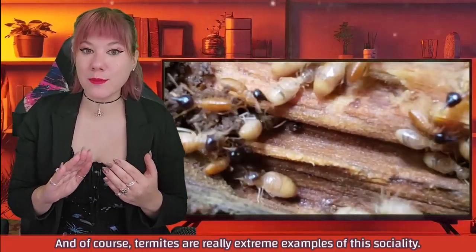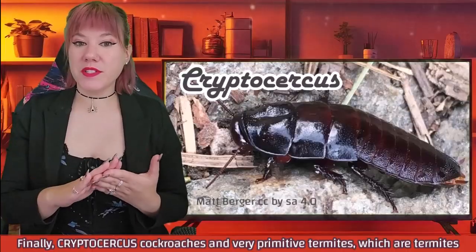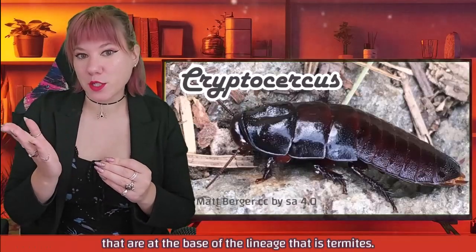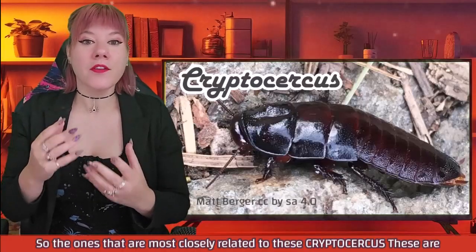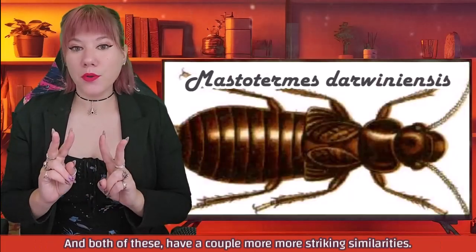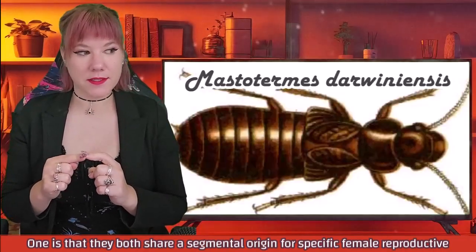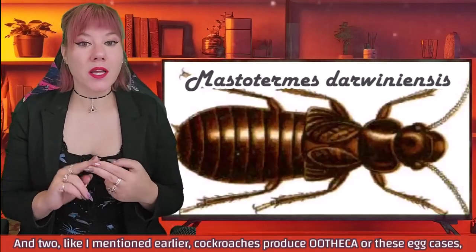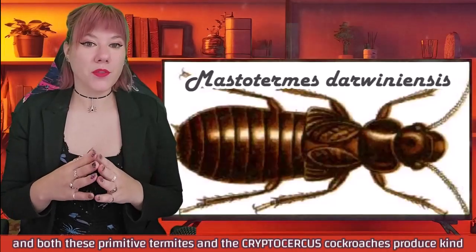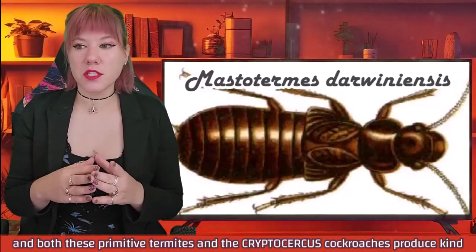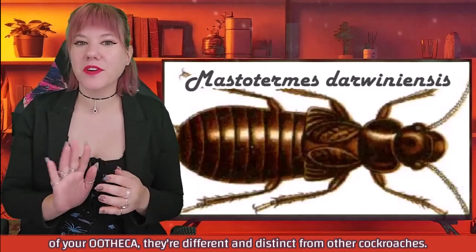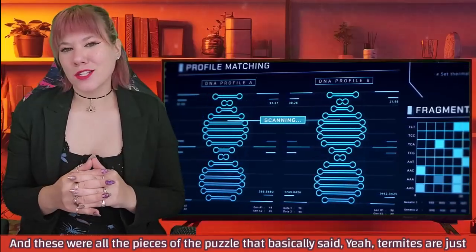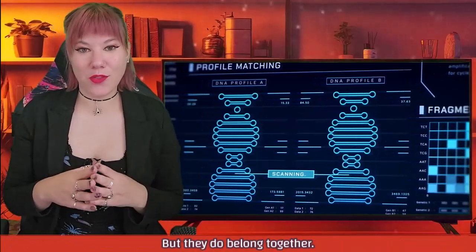While there is evidence that some cockroaches are social — they all live together and if they're touching each other they tend to reproduce better — they don't have a complicated grooming behavior like Cryptocercus do. And termites are really extreme examples of this sociality. Finally, Cryptocercus cockroaches and very primitive termites — specifically Mastotermes darwiniensis, the ones at the base of the termite lineage most closely related to Cryptocercus — share a couple more striking similarities: they both share a segmental origin for specific female reproductive structures, and both produce rather unusual ootheca that are different and distinct from those of other cockroaches.